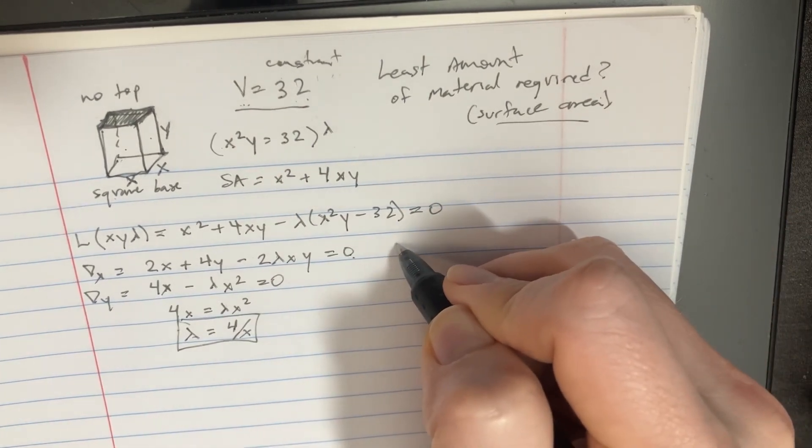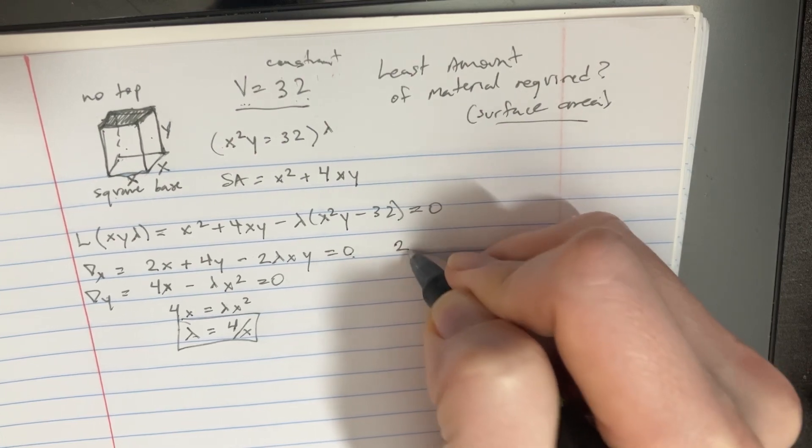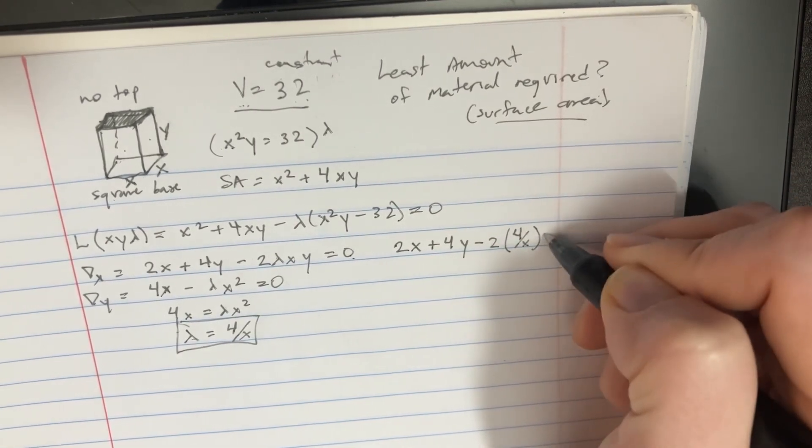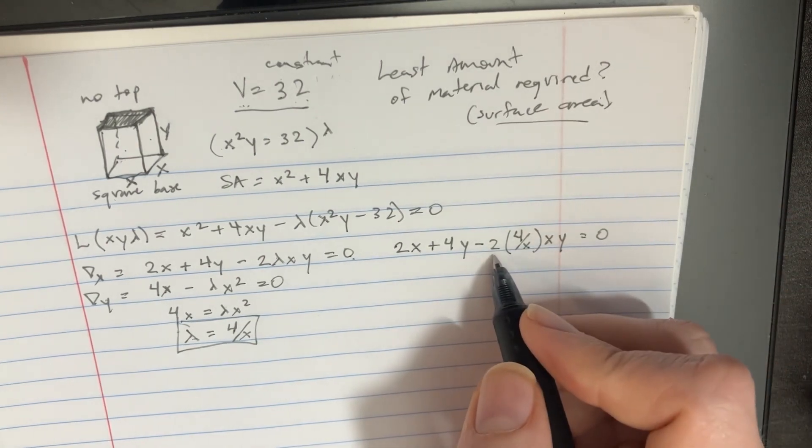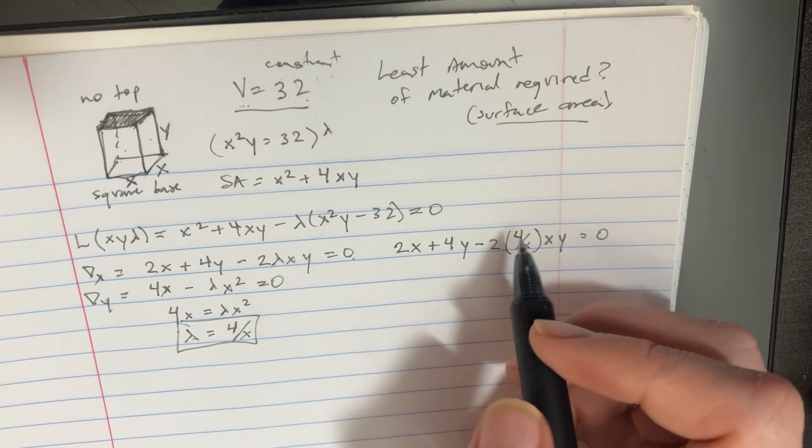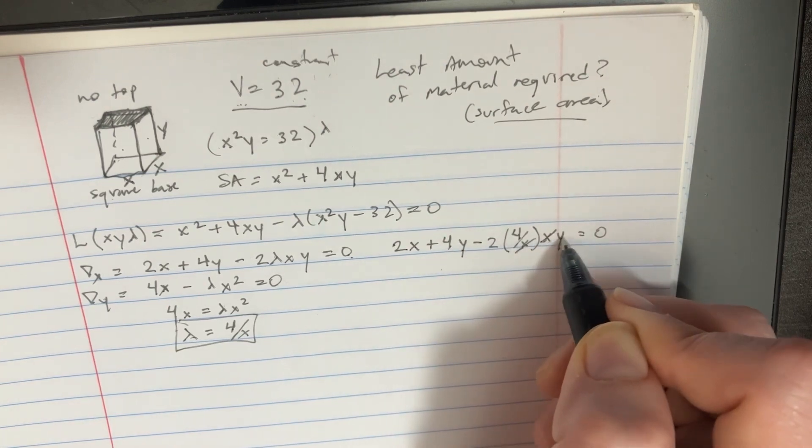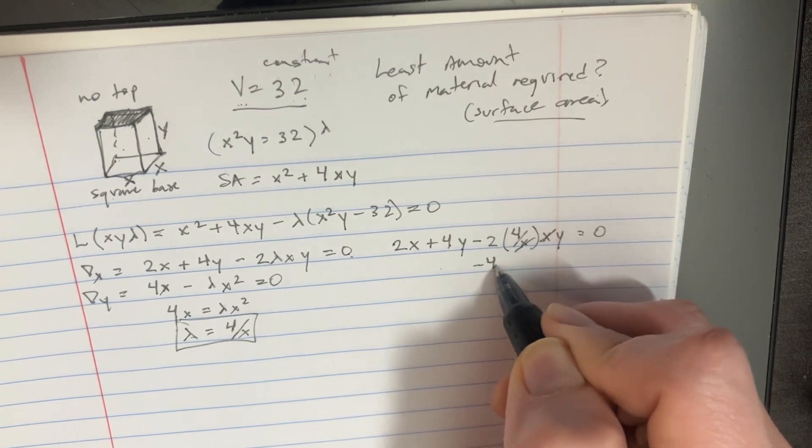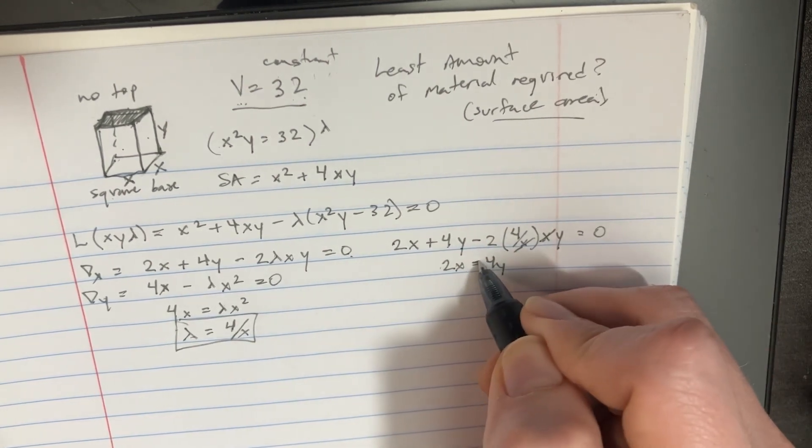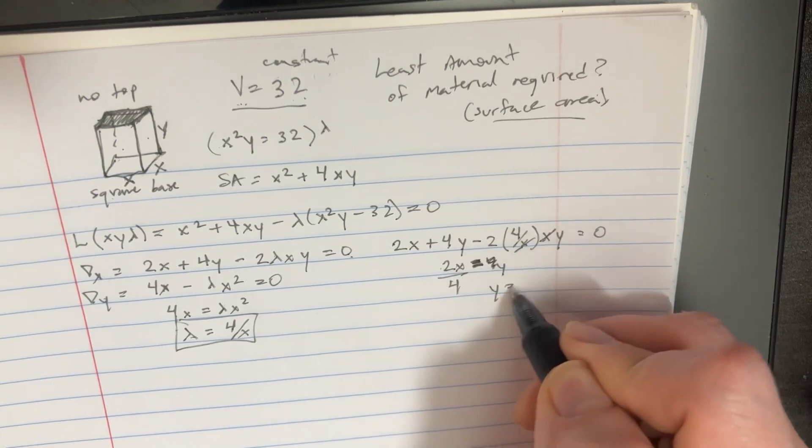Then we can go back to this equation and say that 2x plus 4y minus 2 times 4 over x times xy equals zero, which means we'll just try to solve y in terms of x. This will go away, so we'll have 2x minus 8y, which gives us minus 4y. That's supposed to be equal to zero. That means these two are just equal to each other, and in that case we'll divide this by 4 and then we'll get y equals x over 2.